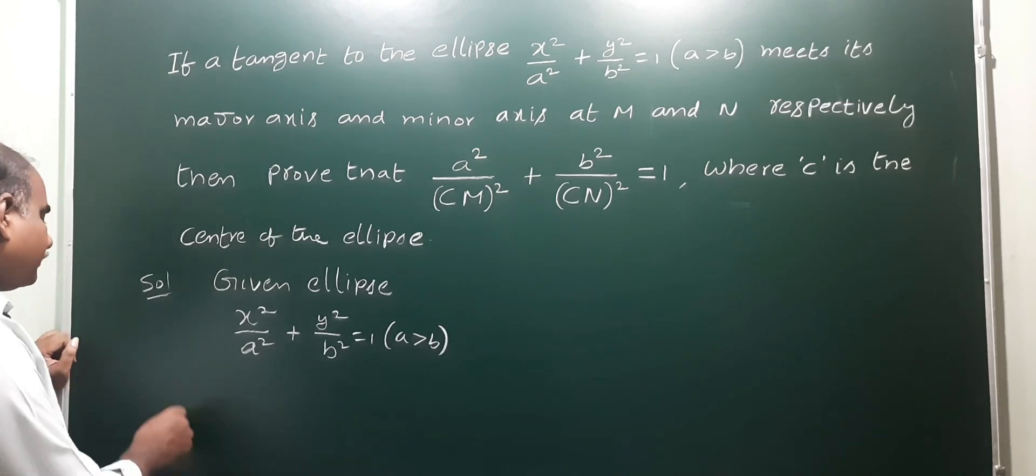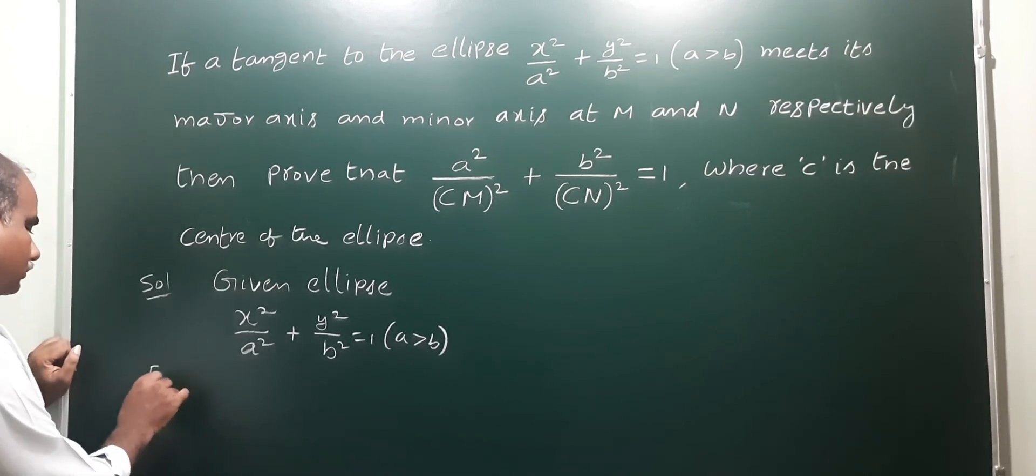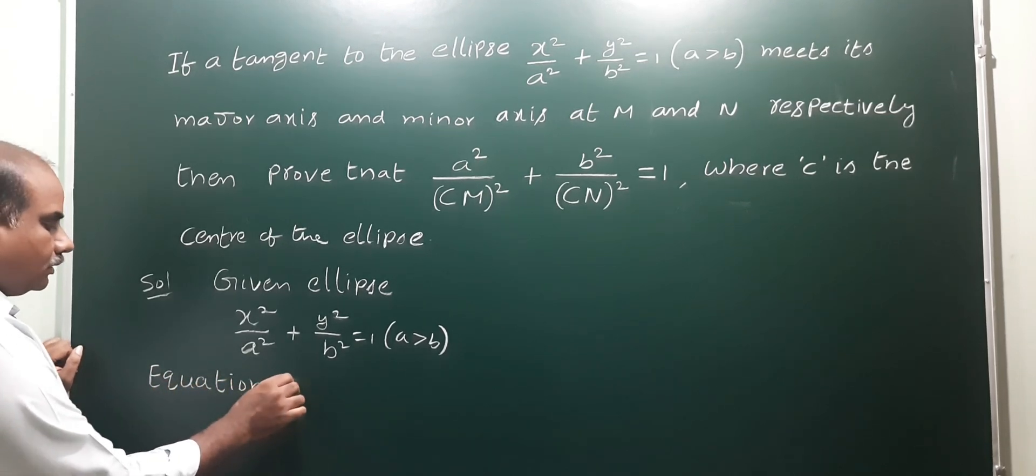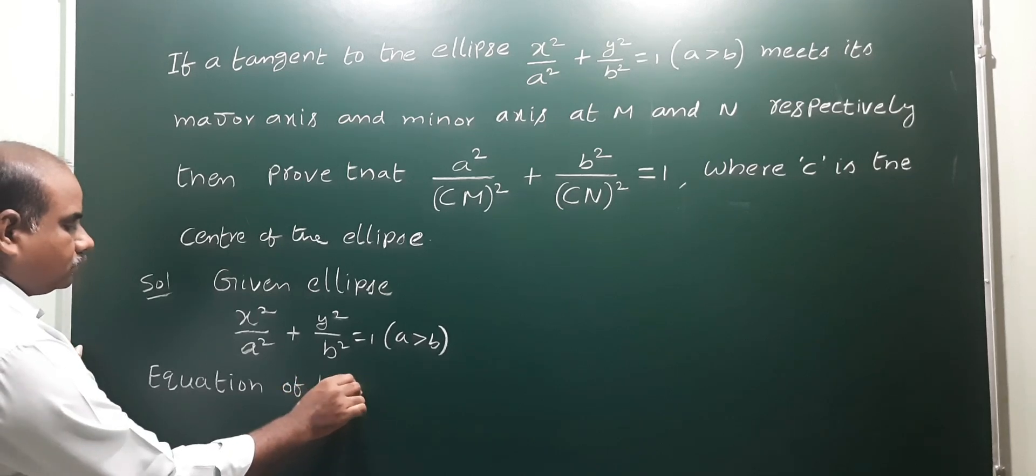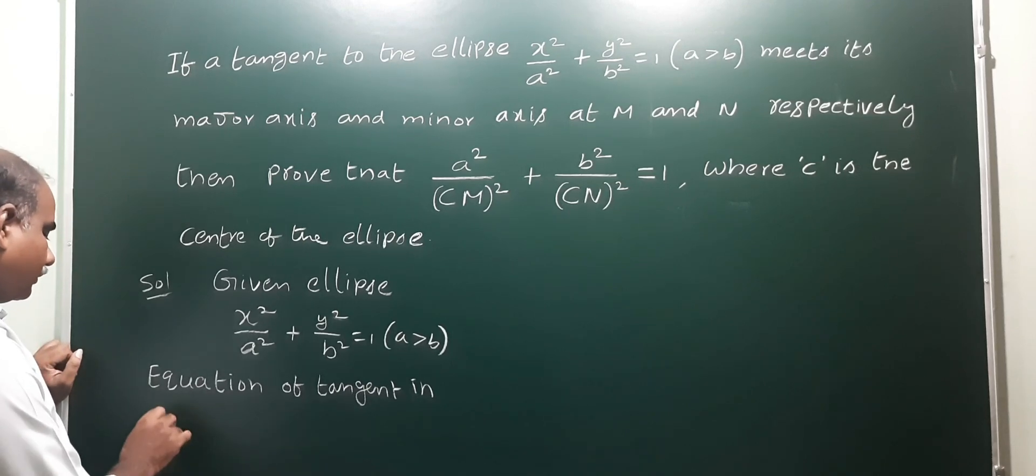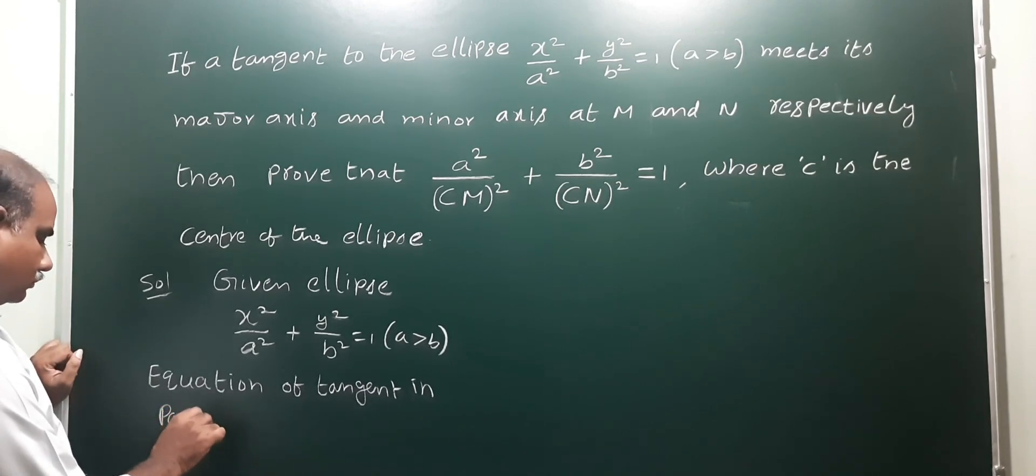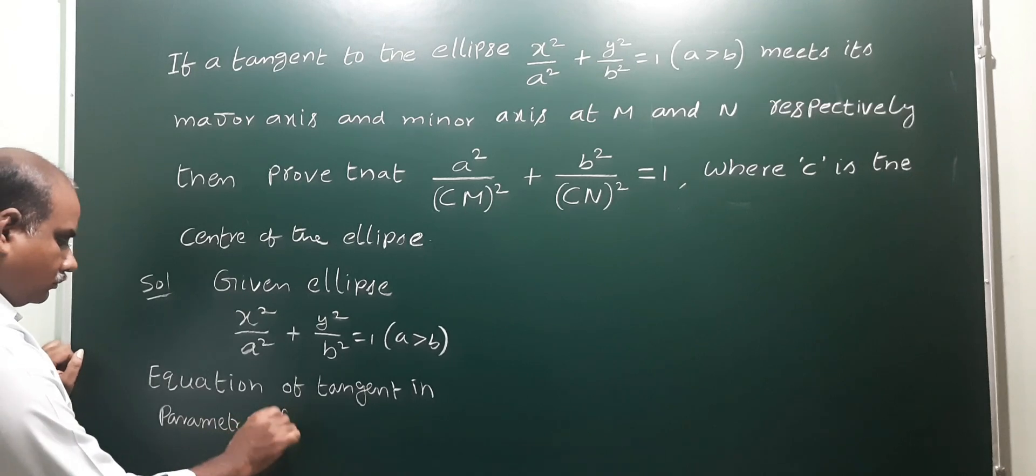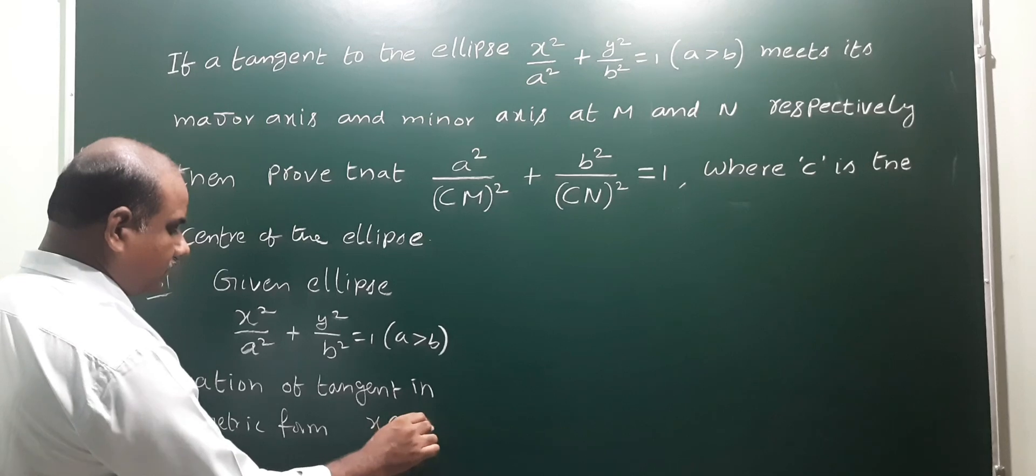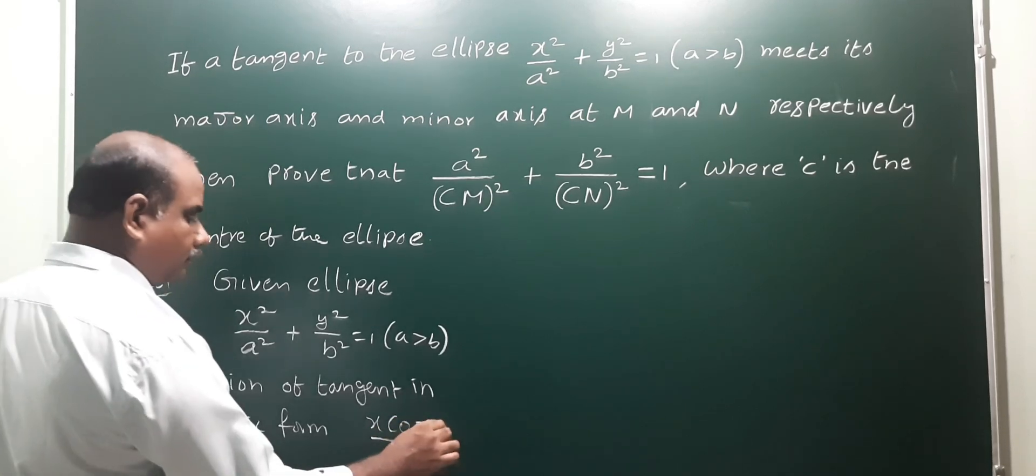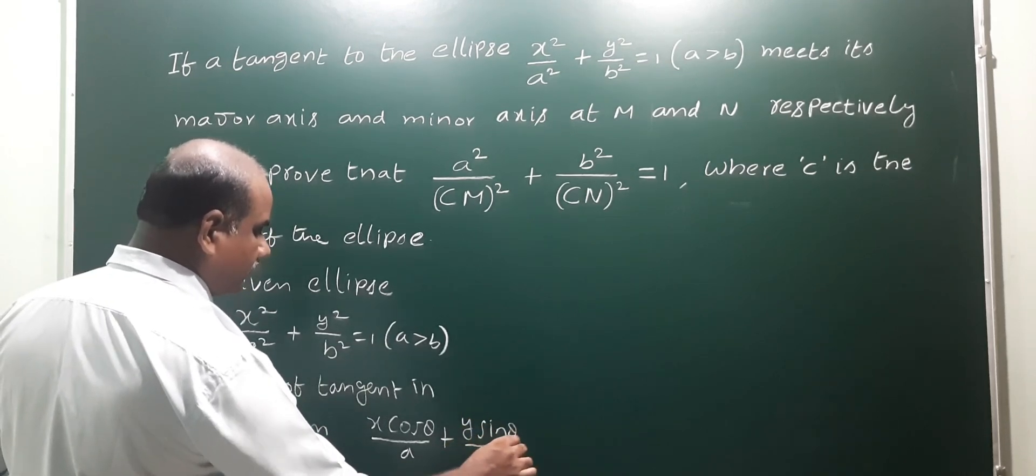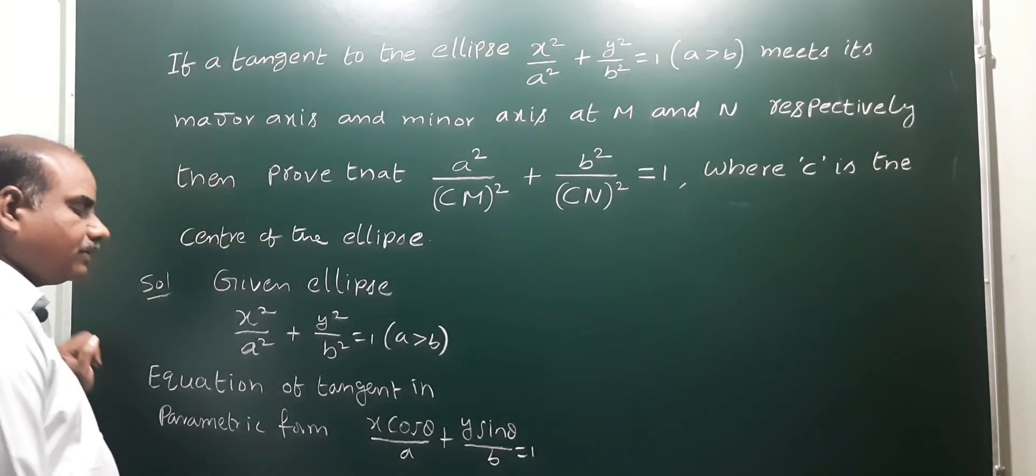So the equation of ellipse series, equation of tangent in parametric form: x cos theta by a plus y sin theta by b is equal to 1. This is the equation of tangent in parametric form.